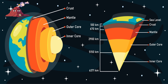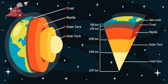The outer core is a layer of liquid metal located under the mantle. It's made mostly of iron and nickel, and it's very hot and under a lot of pressure. The movement of the liquid metal in the outer core is what creates the Earth's magnetic field.